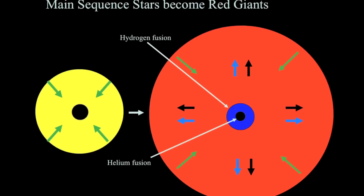In the red giant stage, the star has expanded while the core has crushed down. The interior has layers: a core where helium is fusing into carbon and oxygen, surrounded by a hot dense hydrogen shell that is also fusing and generating an outward flow of energy. This gas pressure pushes the outer hydrogen layers much farther out than before — those outermost layers are not fusing.